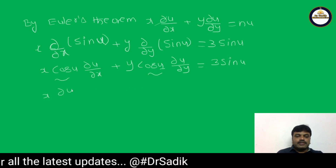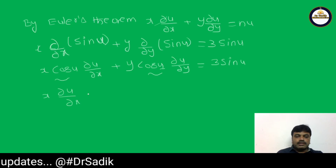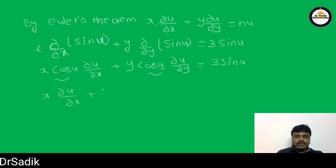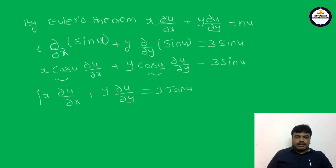Differentiating sin u with respect to x gives cos u · ∂u/∂x, and differentiating with respect to y gives cos u · ∂u/∂y. So x·cos u·∂u/∂x + y·cos u·∂u/∂y = 3·sin u. Taking cos u common, then x·∂u/∂x + y·∂u/∂y = 3·sin u / cos u = 3 tan u.